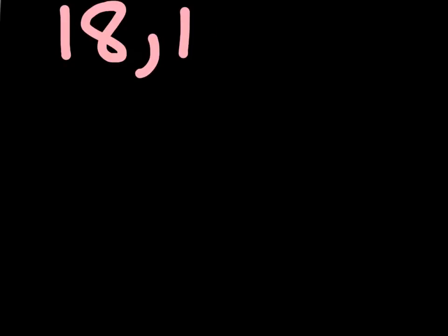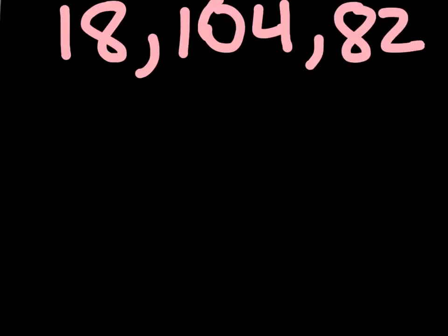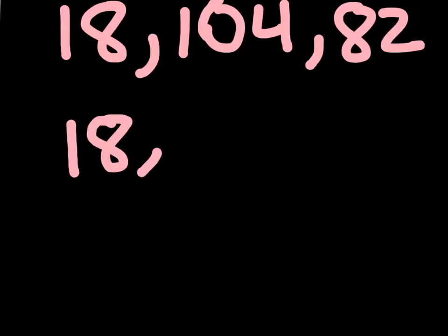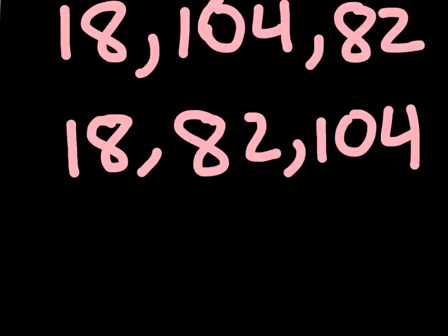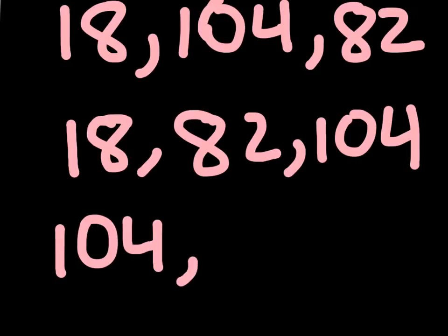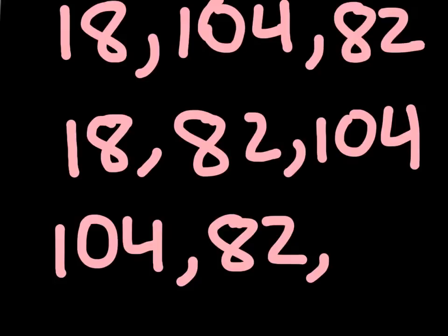Okay, so the first order was 18, 104, and 82. To put that in least to greatest, you would first find the lowest number, which is 18. Then the second lowest number would be 82. And then the highest number, or third lowest number, would be 104. Now to put it in greatest to least, you would first find the highest number, which would be 104. Then the second highest number, which would be 82. Then the lowest number, or third highest number, which would be 18.